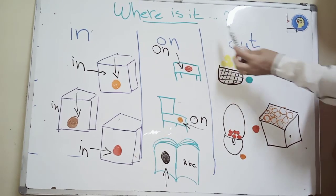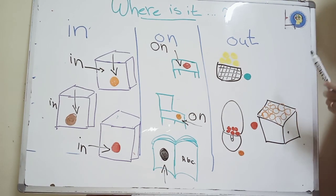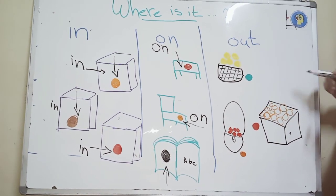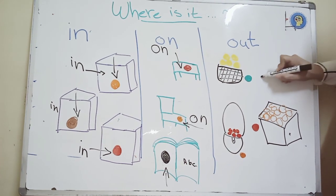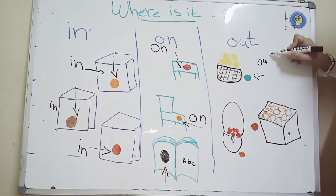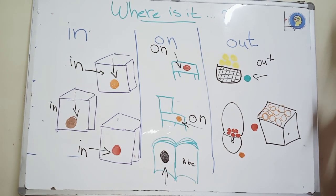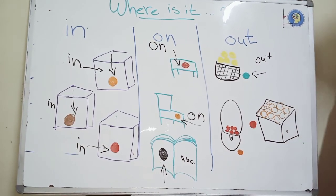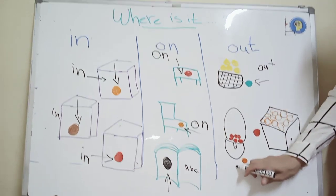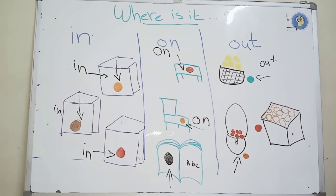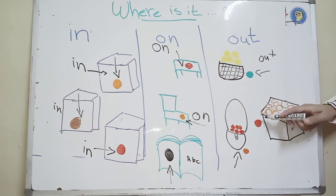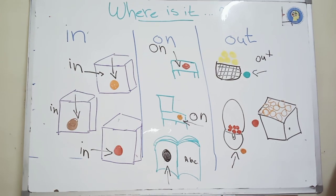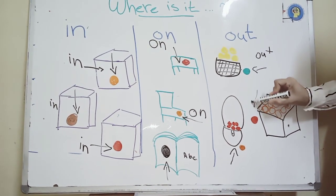The third example: out. Where is the green ball? The green ball — yes, it's out the basket. Where is the orange ball? The orange ball is out the back. Where is the red ball? The red ball is out the books.